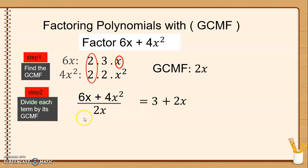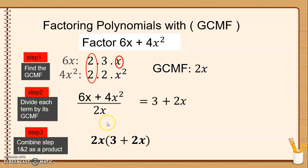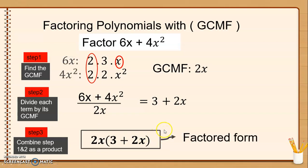Step number 3: Combine step 1 and step 2 as a product. Step 1 is 2x, and step 2 is 3 plus 2x. So the result is 2x times (3 plus 2x). This is now the factored form of 6x plus 4x squared.